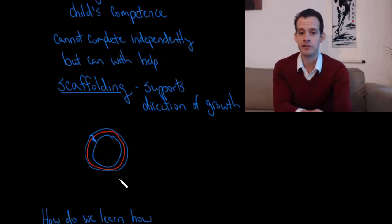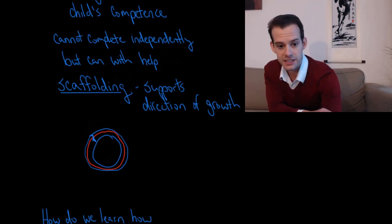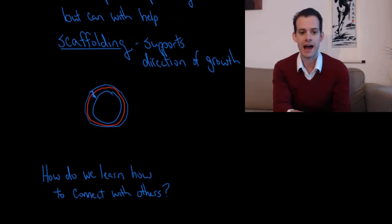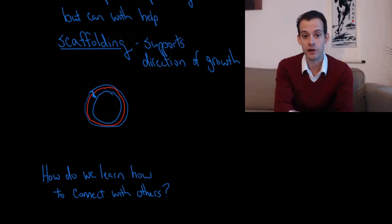And this idea that we depend on others to help shape our development and they help to push us to do things that we can't do independently brings us to the consideration of how it is we learn how to make connections with other people. How do we get these people who are helping us in our development? How do we connect with them? How do we form social relationships? And that's what we're going to look at in the next video, starting with the most important relationship, the first relationship that we might form with our mother, which is referred to as attachment.